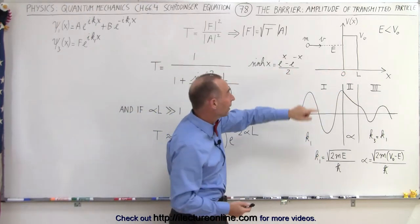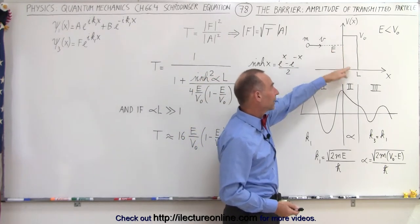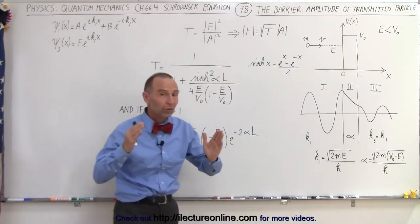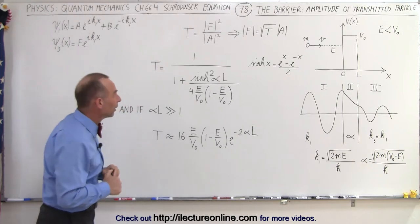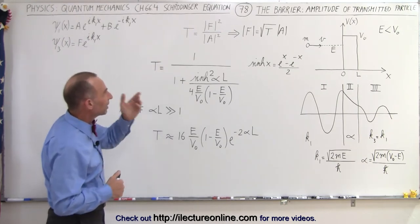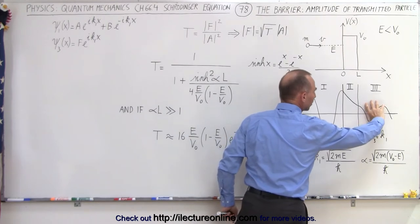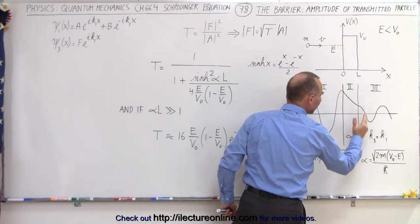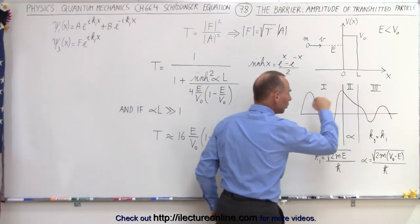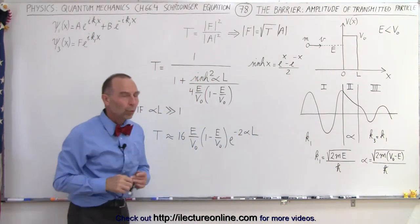And of course that depends on the energy of the particle and the potential of the barrier as well as the width of the barrier. But what we're trying to do here is calculate the amplitude of the oscillations of the particle in region 3 after it passed through the barrier in comparison to the amplitude of the particle in region 1.